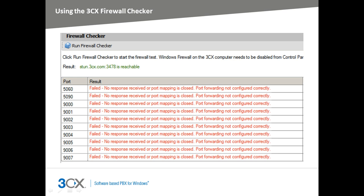If you have not configured your WAN-to-LAN device yet, the first time you run the firewall checker you will receive a report showing that all the required ports are not correctly configured with port forwarding. Here we can see a typical report from the firewall checker for a WAN-to-LAN device that has been partially configured with port forwarding for the SIP port and the 3CX standard protocol port, but where the RTP and RTCP port range for audio delivery has not yet been forwarded correctly.